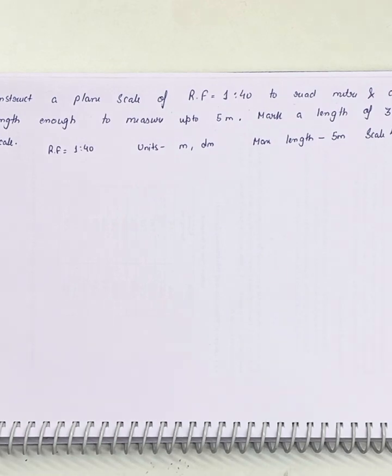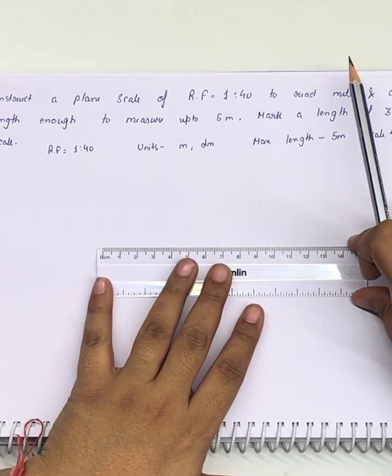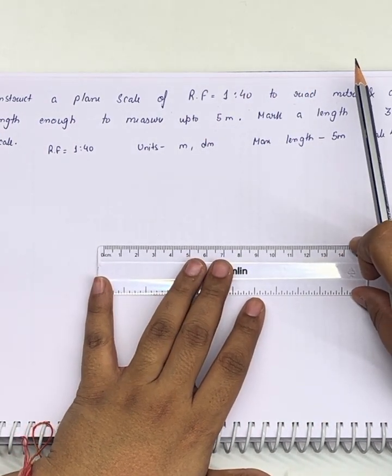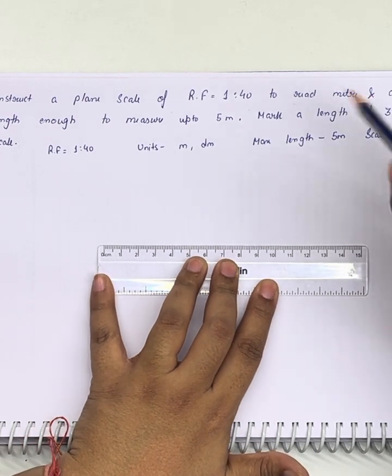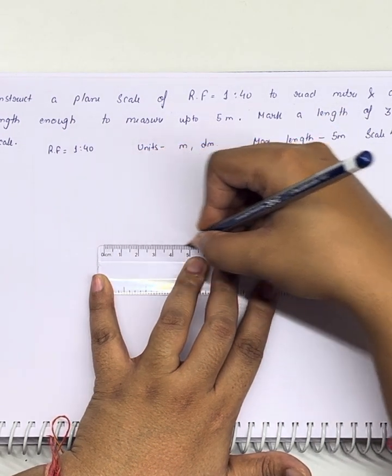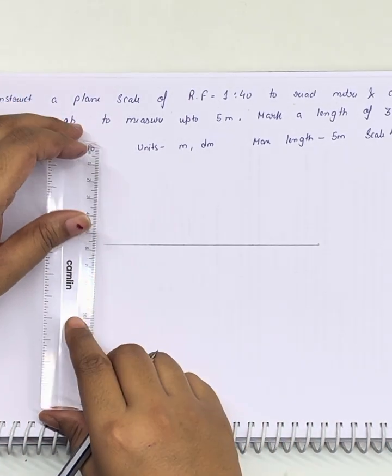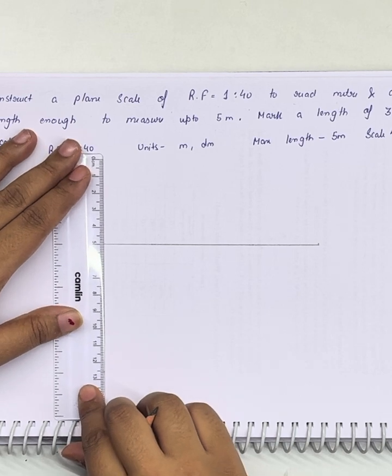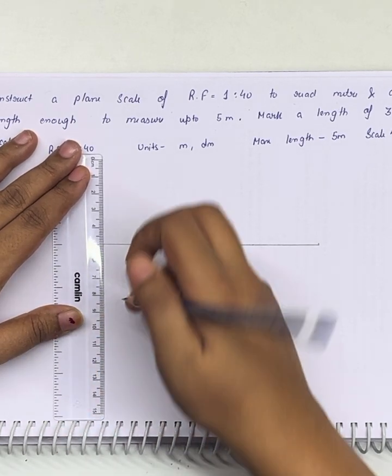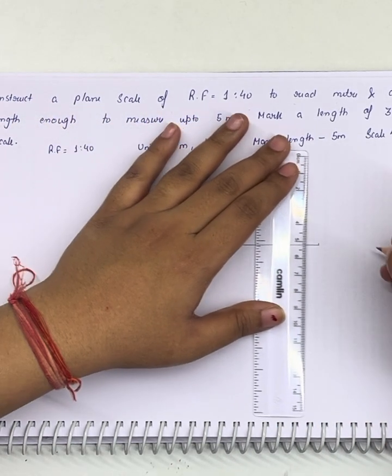Now we know the length of our scale we need to draw, that is 12.5 centimeters. Maximum length is of 5 meters, so we will be needing to divide our scale into 5 equal parts. So we will draw a line of 12.5 centimeters here. This is a line of 12.5 centimeters. We will enclose it in a box.